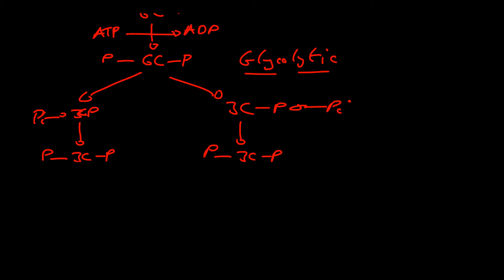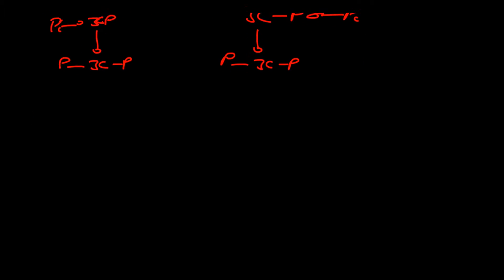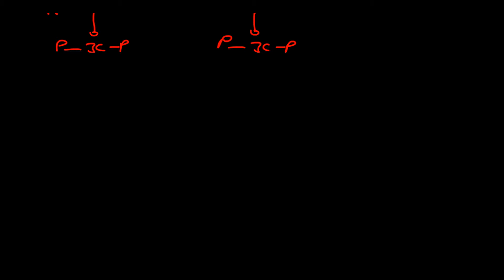That triose bisphosphate then loses the two phosphates onto an ADP, forming an ATP and another ATP. Remember you've got two triose bisphosphates that result from the glycolytic step, so this produces in total four ATPs. We put in two, we've made four, giving us a net production of two ATPs.